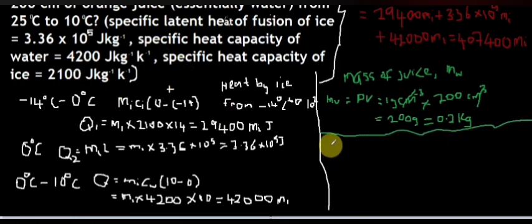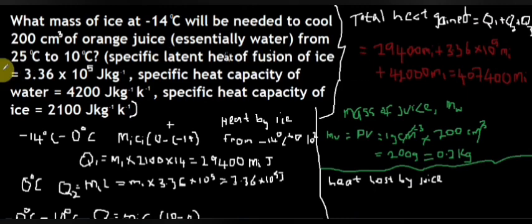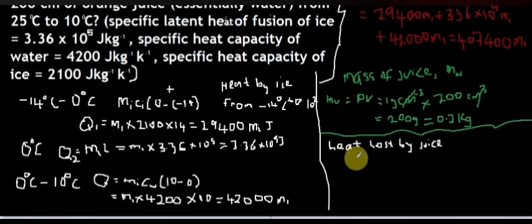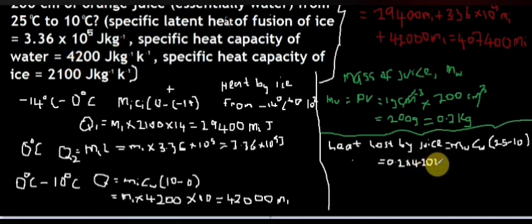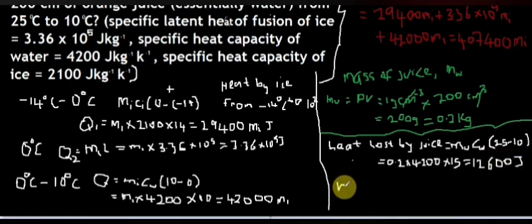Now we calculate the heat lost by the juice as its temperature drops from 25 degrees centigrade to 10 degrees centigrade. Heat lost by juice equals mass of juice times specific heat capacity times temperature change: 0.2 × 4200 × (25 − 10) = 0.2 × 4200 × 15 = 12,600 joules. By the conservation of energy, heat lost by juice equals heat gained by ice.